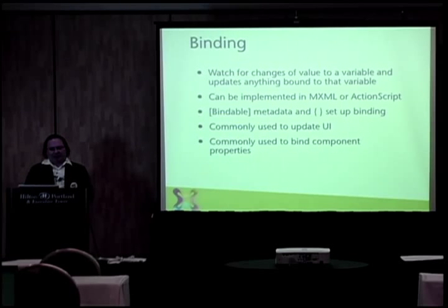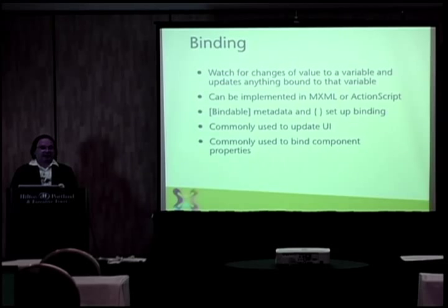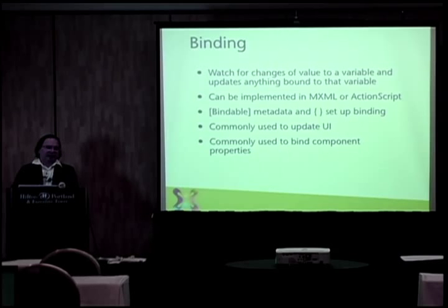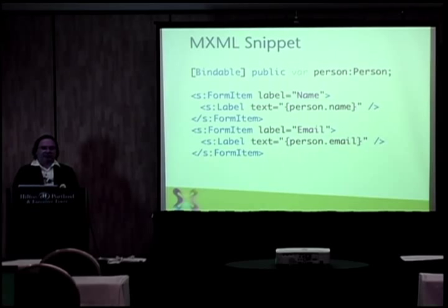Binding watches for any change in value of a variable, and if that variable changes, anything bound to it automatically gets updated — generally you don't have to write any code for that. In MXML, you use curly braces for binding and set up variables with a Bindable metadata tag to say watch this for changes. It's commonly used to update a UI or to pass values into a component. Here's another example showing how you create an ActionScript variable, make it bindable, and then use it to pass into labels on the screen that automatically get updated.